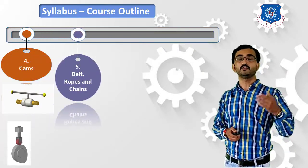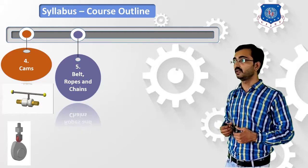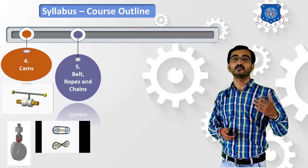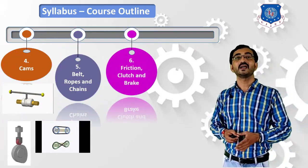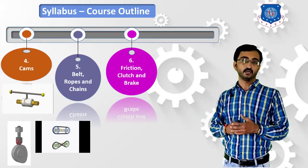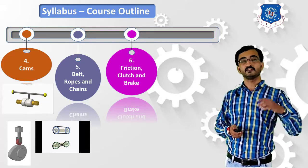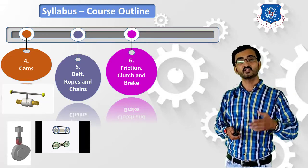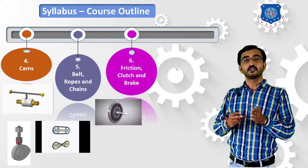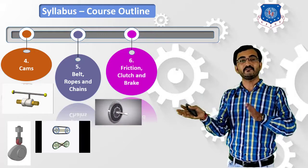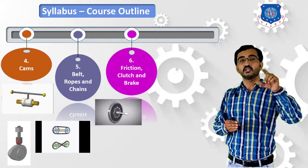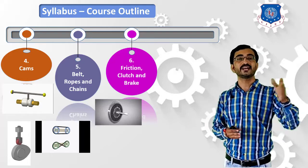In chapter five we will learn about belt, rope, and chain — three components mainly used for power transmission. In chapter six we will learn the fundamentals of friction and how friction is useful for developing components known as clutch and brake. The concept of friction will help you understand the function of a clutch, which is mainly to engage and disengage the driving and driven shaft. You will learn the different types of clutches used in applications.